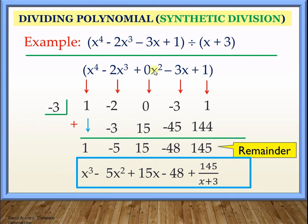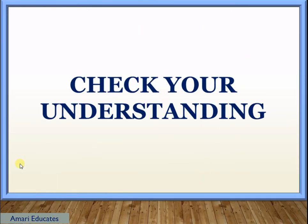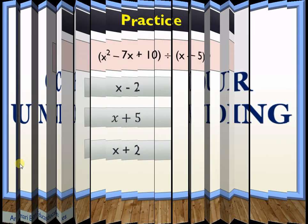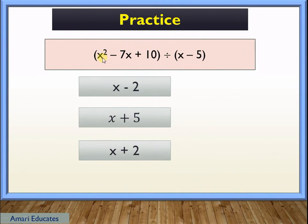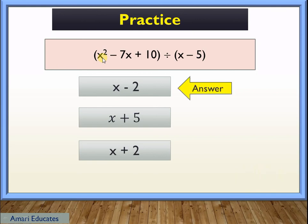At this point, replay the video if you feel you need a short recall. Now let's check your understanding. First practice: divide the quantity of x squared minus 7x plus 10 by the quantity of x minus 5. You can pause the video if you need more time. The correct answer is x minus 2.